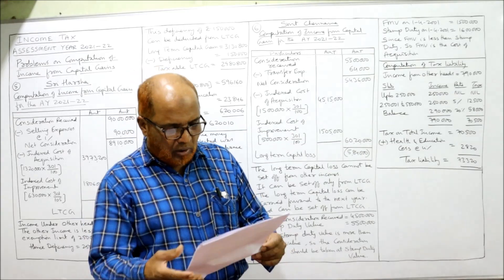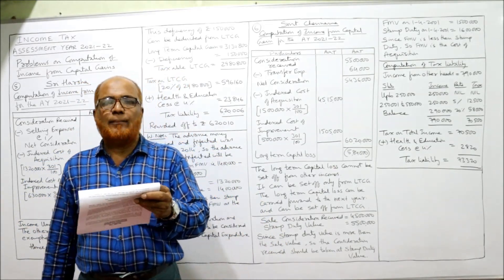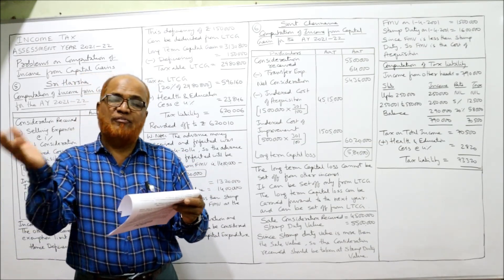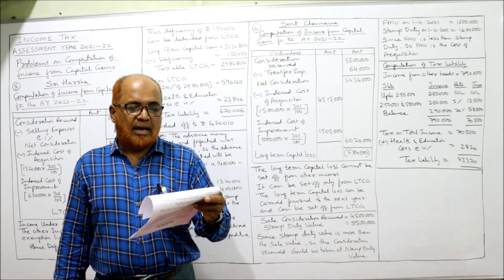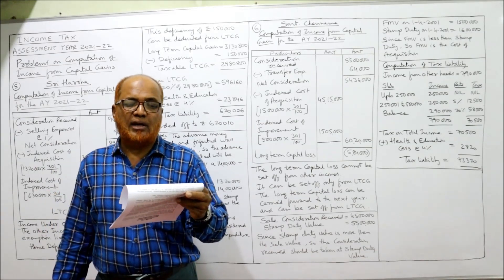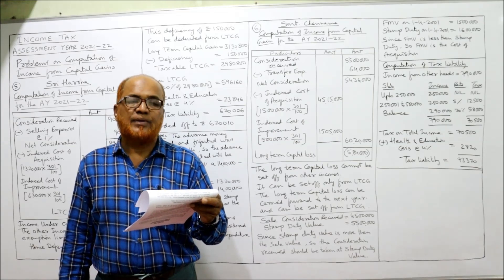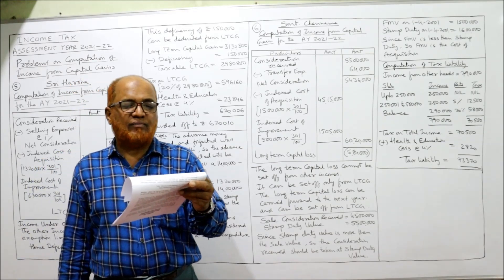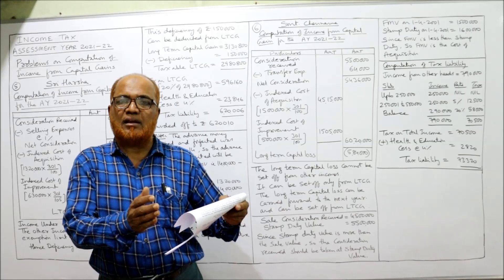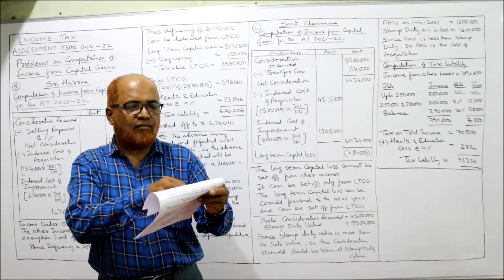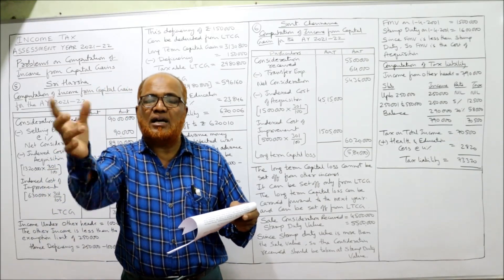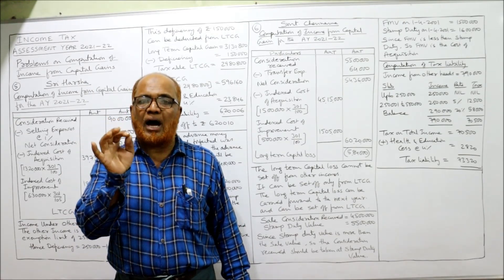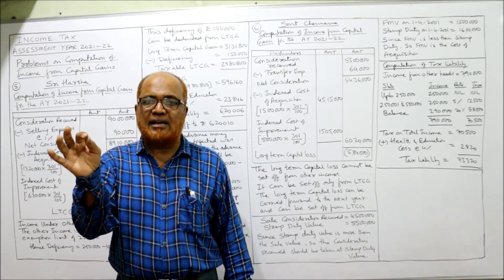Now coming to problem number six. Srimati Chendamma constructed a building for Rs. 5 lakh in financial year 1985-86 — that means before 1-4-2001. Rs. 5 lakh was spent for adding one more floor in August 2001. She sold the building for Rs. 45 lakh during the previous year. The stamp duty value was Rs. 55 lakh. The Income Tax Act says the consideration should be the higher of actual sale consideration received or stamp duty value.